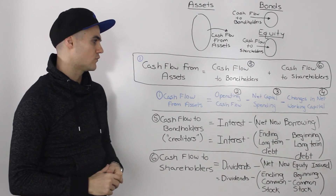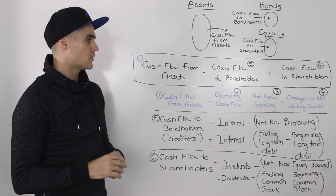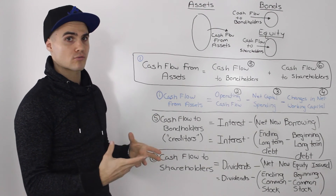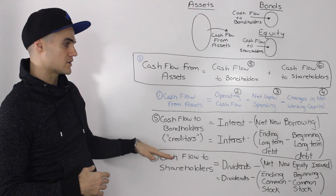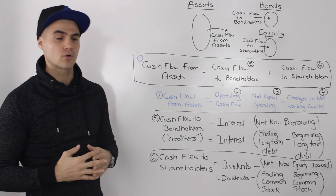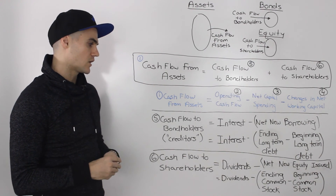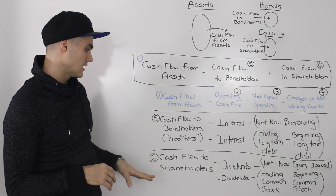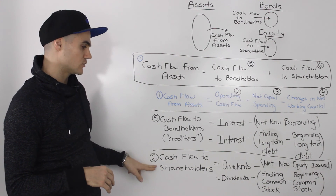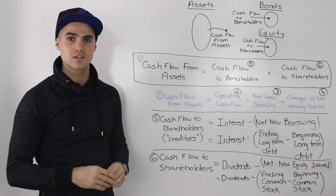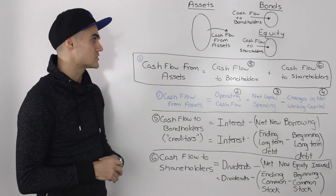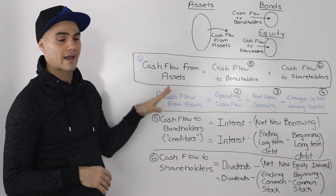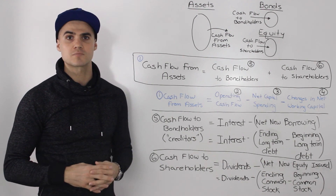That's it for the whole video — a lot went on. Whenever you run into a question asking for one of these three cash flows or all three, use the formulas and just plug in the values. The most confusing part is probably cash flow to shareholders when you have to deal with retained earnings, so re-watch that portion a few times if needed. Overall it's not too bad — just use the corresponding formulas whenever you run into that kind of question.